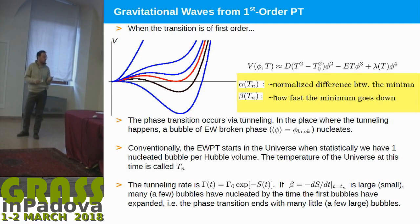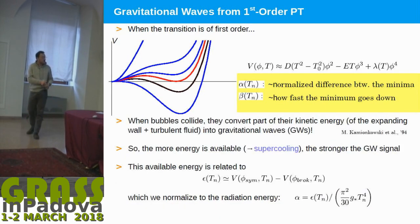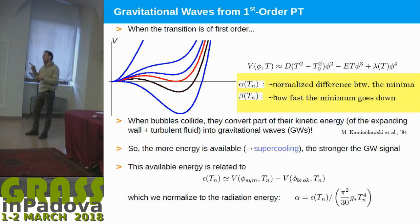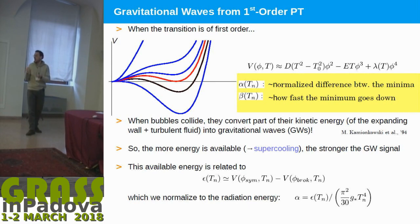Keep in mind that when two bubbles collide they produce gravitational waves. In the case of many, many bubbles, you will have many, many collisions, which means you expect high-frequency gravitational waves. At the contrary, if you have a few bubbles, you have a few collisions, so the typical frequency of production will be lower.